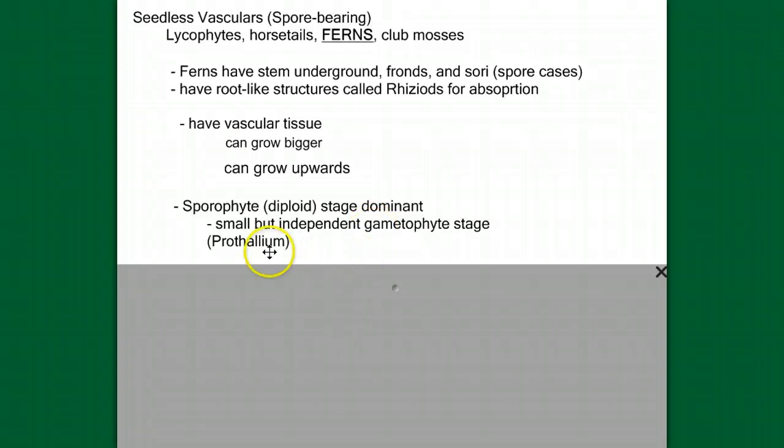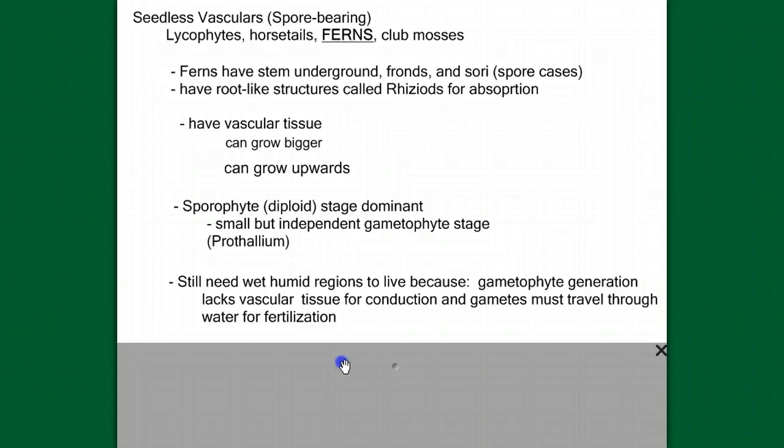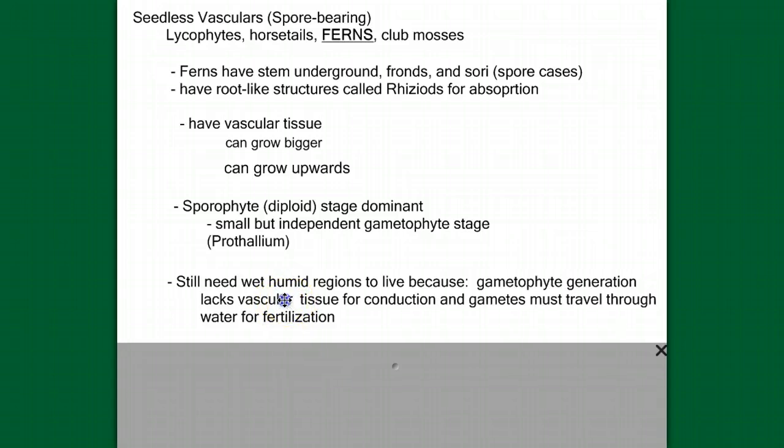And, we know that we have a new change in a dominant sporophyte versus a dominant gametophyte. We do have an independent gametophyte, small prothallium, but it's smaller in size. But we do have this one limitation where we still rely on water for reproduction. So, in that way, ferns are not advanced.